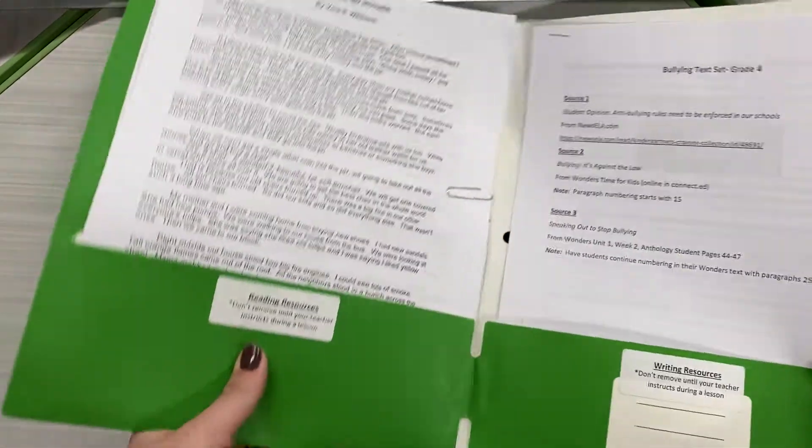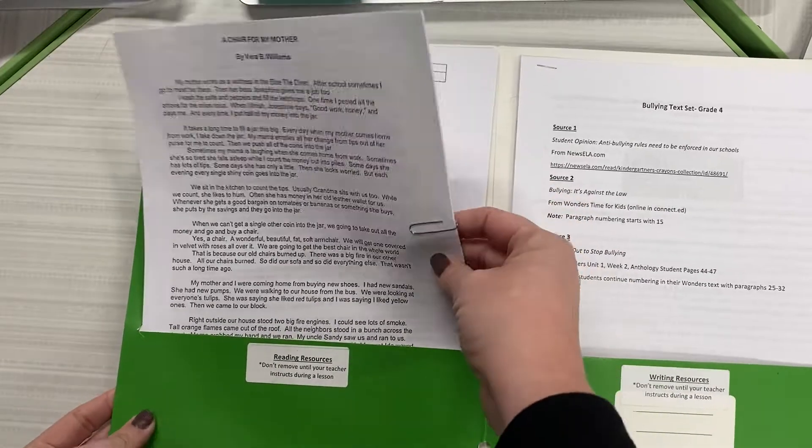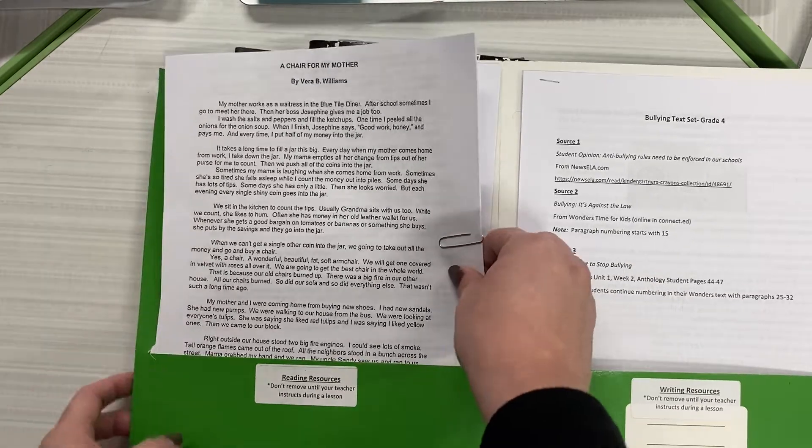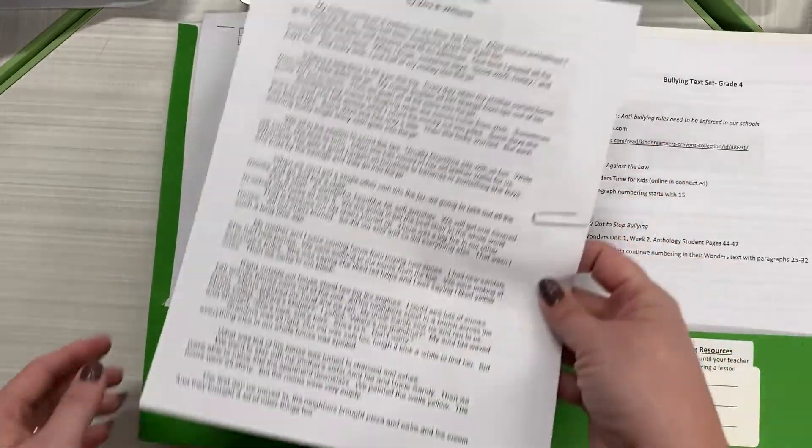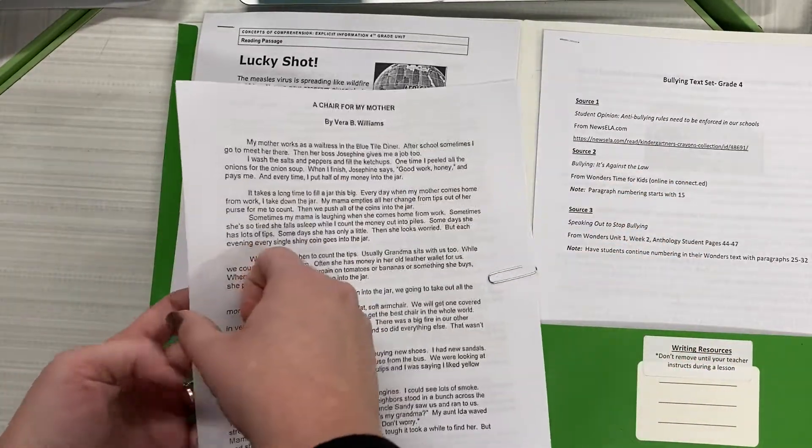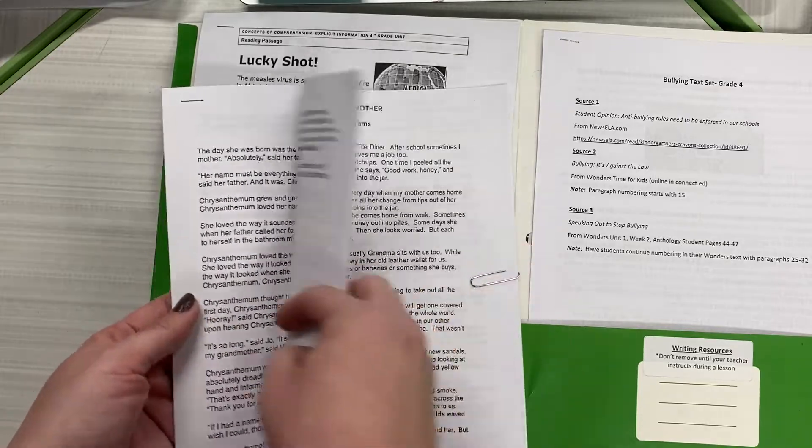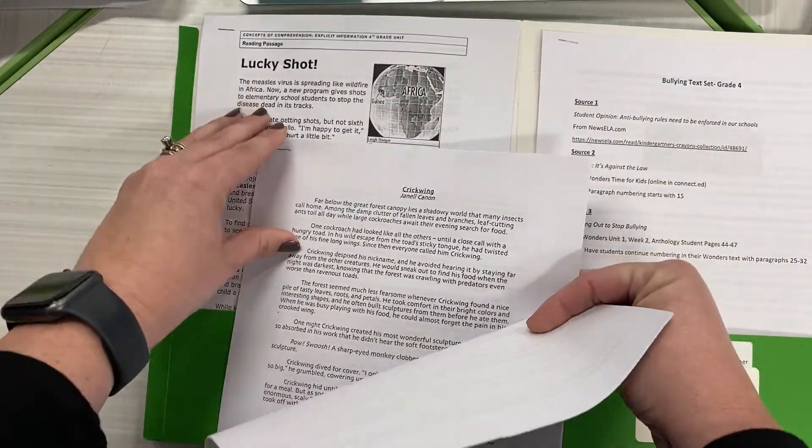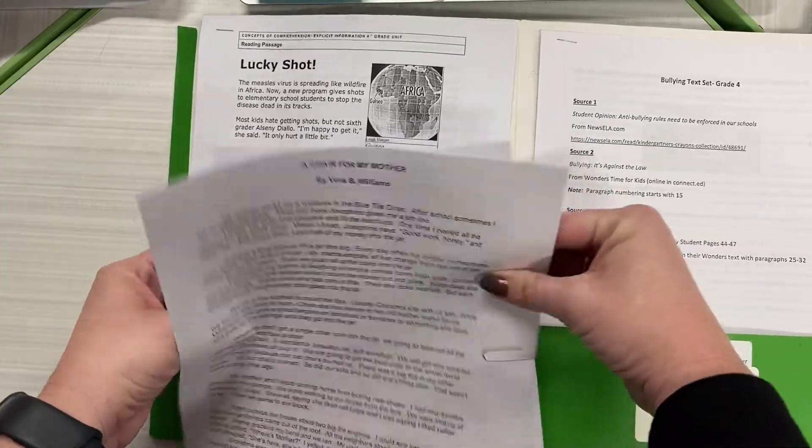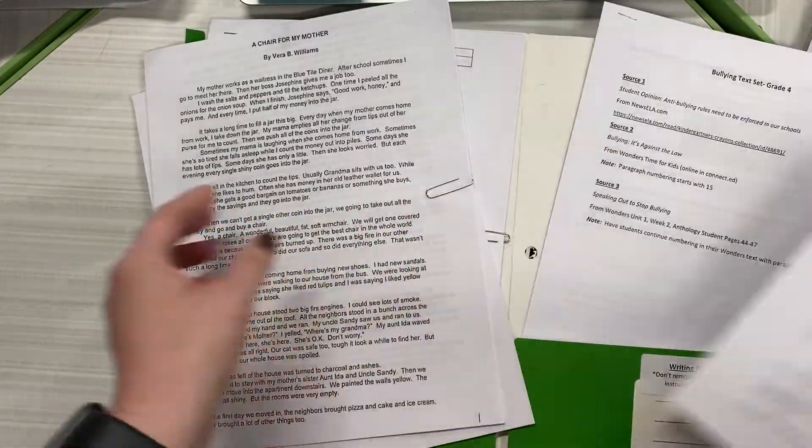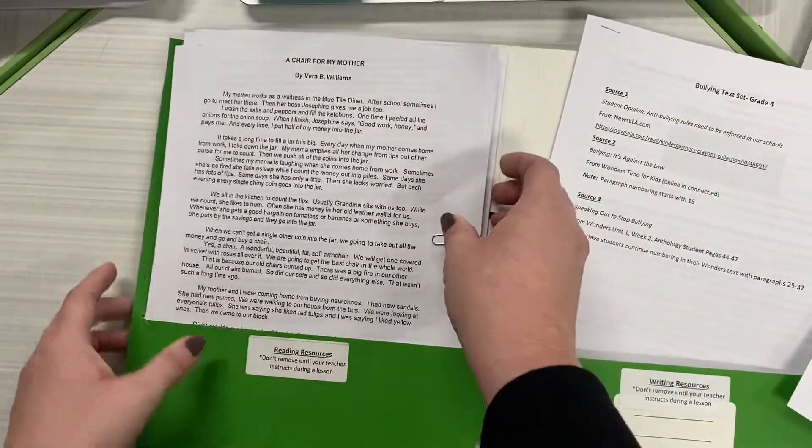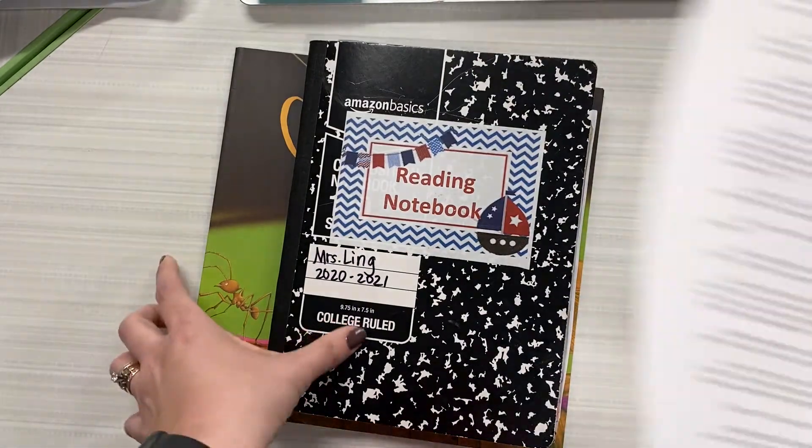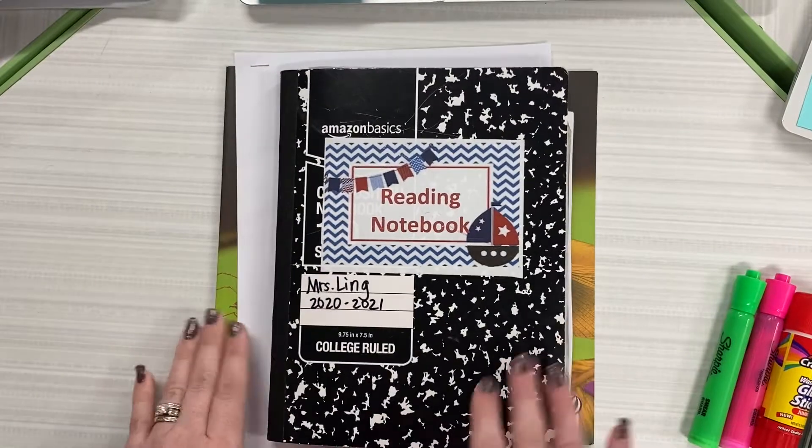Go ahead and open up your resource folder. Today we're going into the second bundle that you were given, these are considered mentor text. We're going to be using our mentor text throughout this unit on notice and note signpost. Find the one entitled Crick Queen, take that out, keep the rest paper clipped, tuck that back into the pocket, close your folder, and tuck this underneath your notebook.